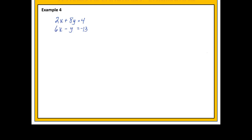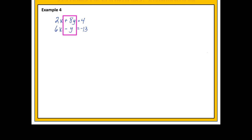Now that we have a general idea how elimination works, let's look at some more complicated examples. In example 4, we have a system where the x terms and y terms are aligned, but the x terms are not opposites — they add up to 8x — and the y terms are not opposites either, they add up to 7y. I need to have opposite terms, and this time I can't simply get them by multiplying by negative 1. But I can make my y terms opposites fairly easily. I have a positive 8y on top and a negative 1y on the bottom. I can make that into a negative 8y by multiplying both sides of the bottom equation by 8, which is allowed by the multiplication property of equality.